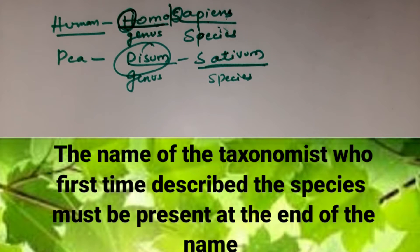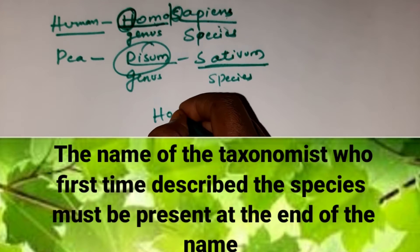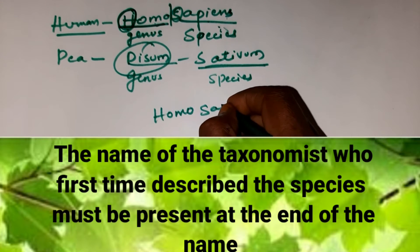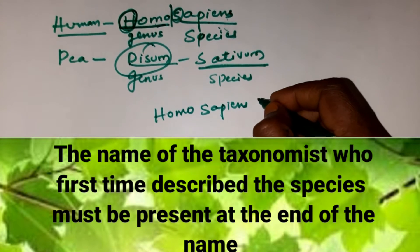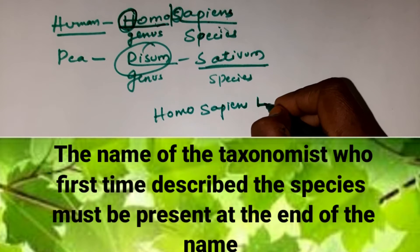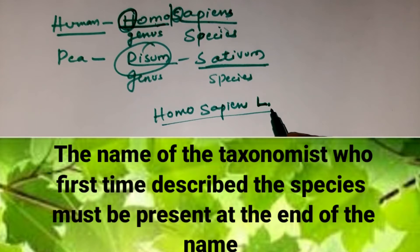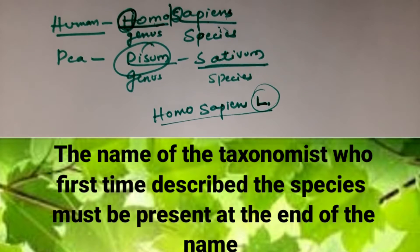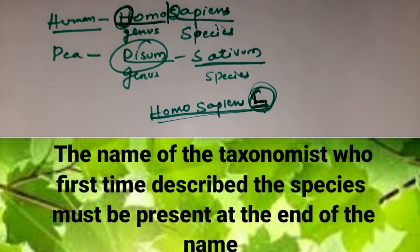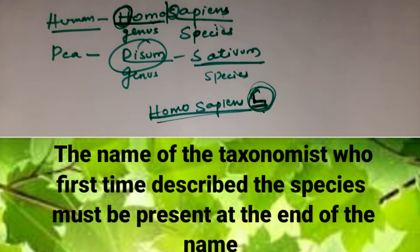For example, you can take Homo sapiens — the scientific name of man is Homo sapiens. At the end of the name we write 'L', which indicates the person who described the species, that is the taxonomist who described the species. These are the rules for naming organisms, which we call binomial nomenclature.